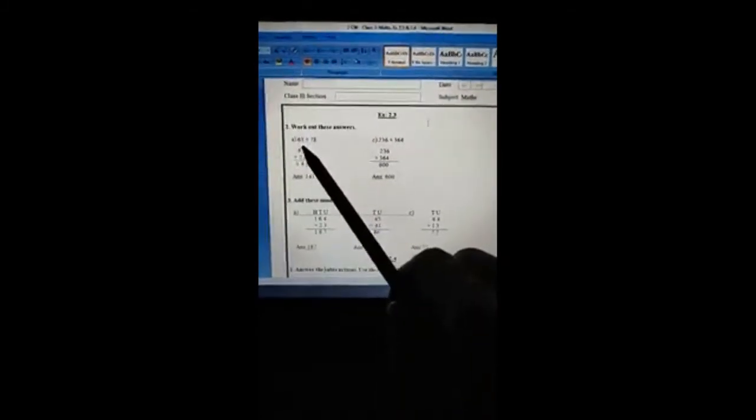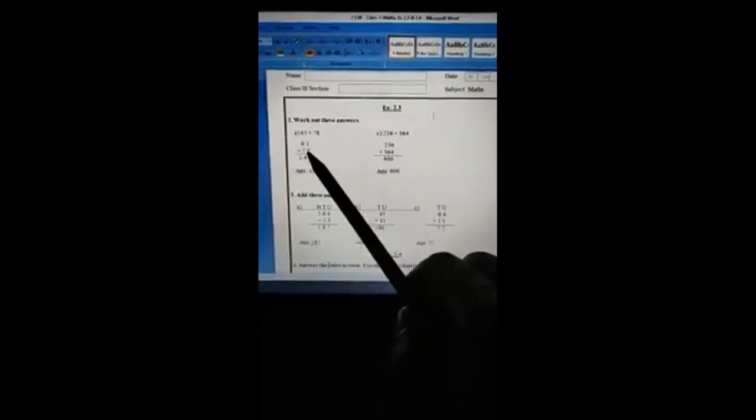Exercise 2.3 number 2: 63 plus 78. We will write 63 plus 78. Addition will be 141. 3 plus 8 is 11, we will write 1 here and carry 1. 6 plus carry 1 is 7, 7 plus 7 will be 14. So the answer is 141.